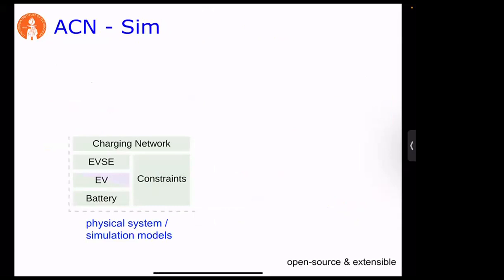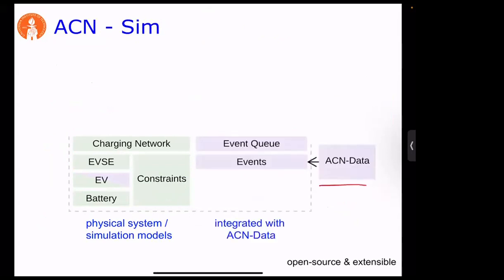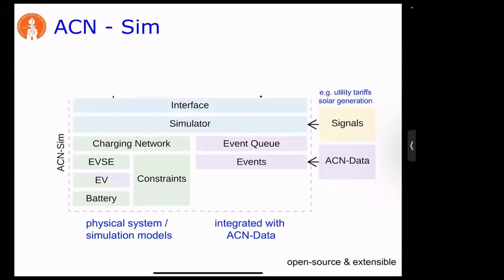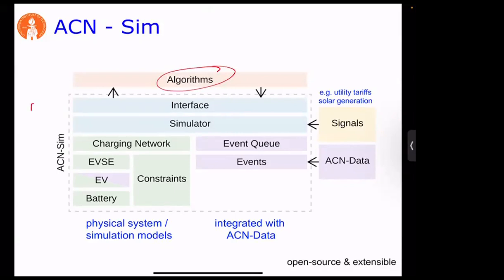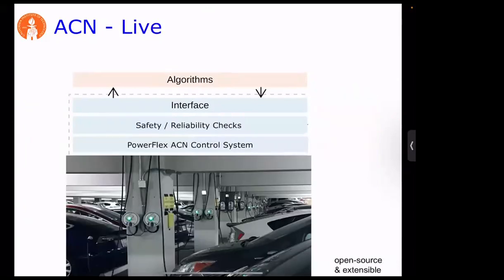The ACN simulator models the charging network, chargers, EV behavior, and battery behavior with different fidelity options. It integrates with real-time ACN data to drive simulations, and can also incorporate utility tariffs and solar generation signals. The interface allows researchers to plug in a new charging algorithm without rebuilding the underlying simulation infrastructure. ACN Live would replace the simulator with the actual cars in the Caltech garage using the same interface, enabling live testing of algorithms — though implementation is not yet complete.